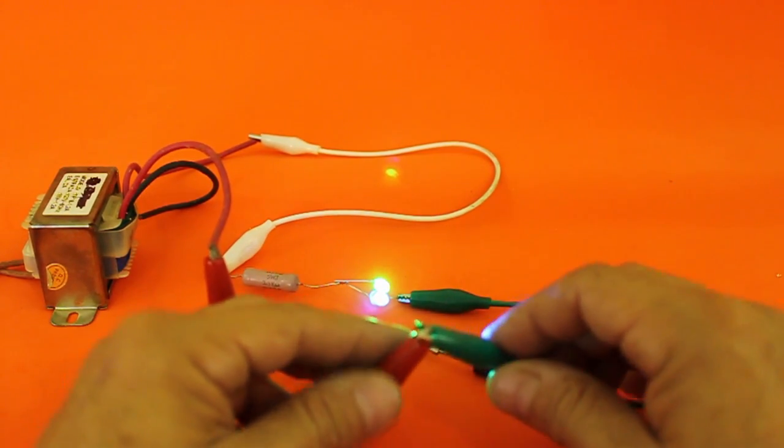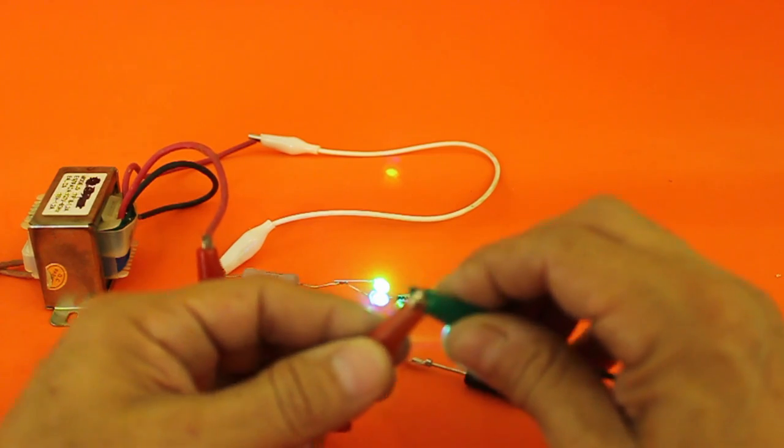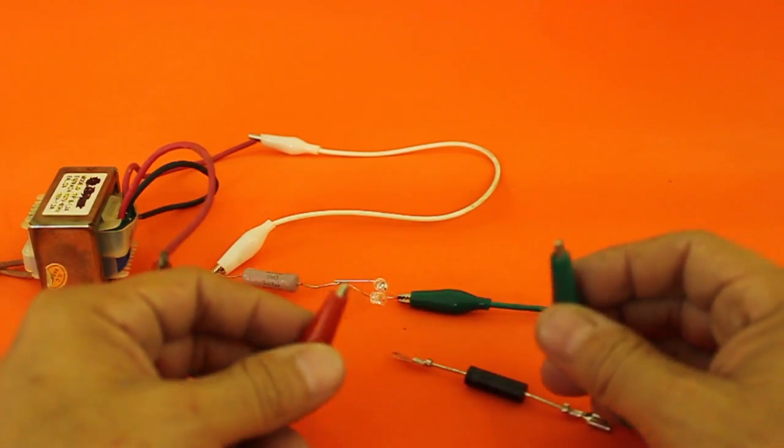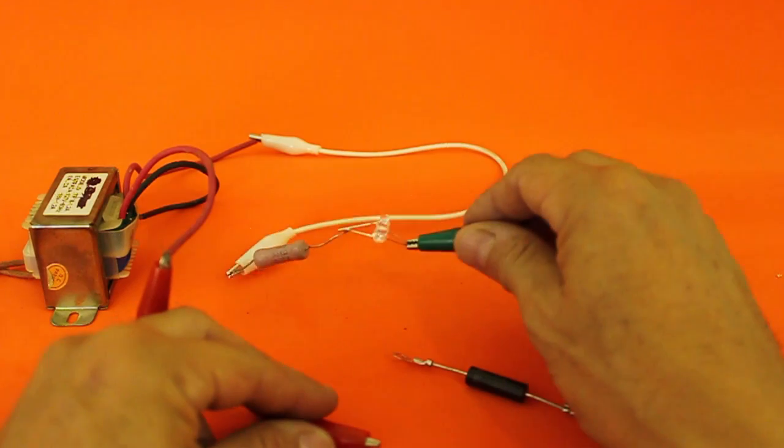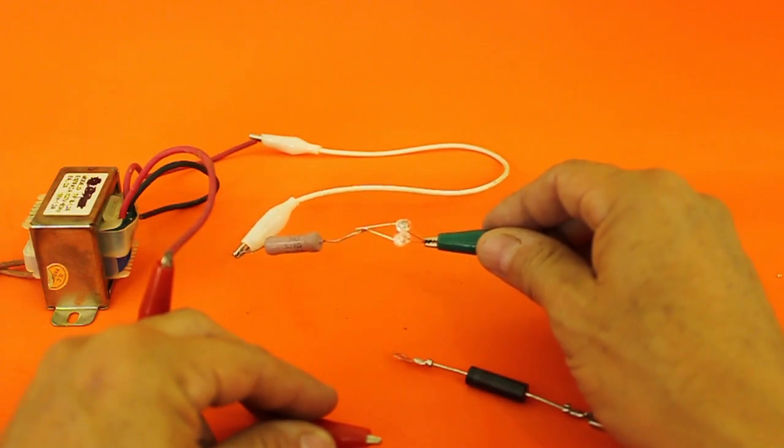And of course, if the diode is open, then we have no path for the current, and both LEDs will be off.